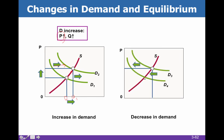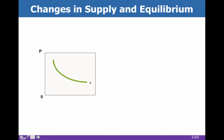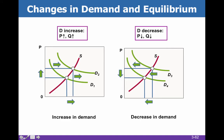Then when we have a decrease in demand, you'll see a decrease in price and a decrease in quantity. That leftward shift of demand pushes our price down and pushes our quantity down. If you're a business and the demand for your product falls, that's a bad situation because you're going to sell fewer items at a lower price — that's kind of the worst case scenario. When demand goes up, you're going to sell more at a higher price — that's kind of the ideal situation.